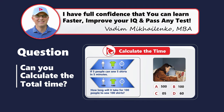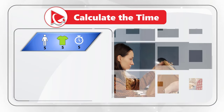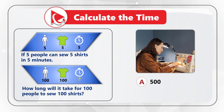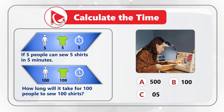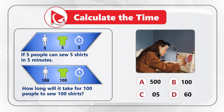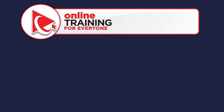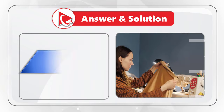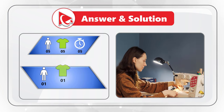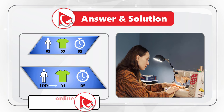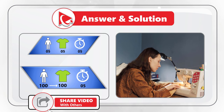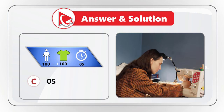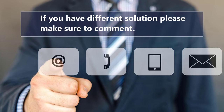Here's a very interesting question which might make you think. If 5 people can sew 5 shirts in 5 minutes, how long will it take for 100 people to sew 100 shirts? Choices: A: 500 minutes, B: 100 minutes, C: 5 minutes, D: 60 minutes. Here's the trick: if 5 people can sew 5 shirts in 5 minutes, then 1 person can sew 1 shirt in 5 minutes. If 100 people work together, their combined productivity is 100 times that of 1 person, so it will take 100 people just 5 minutes to sew 100 shirts. The correct answer is Choice C: 5 minutes.